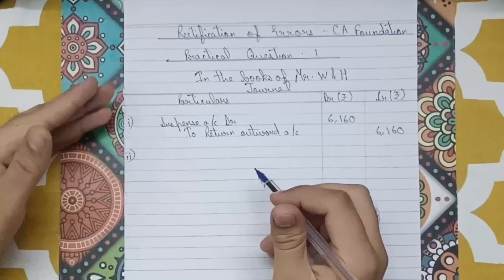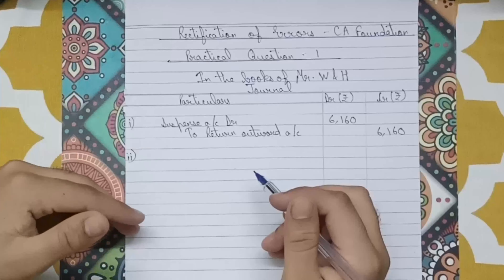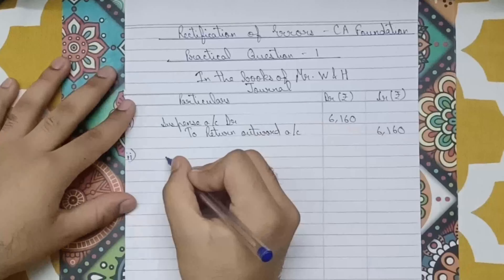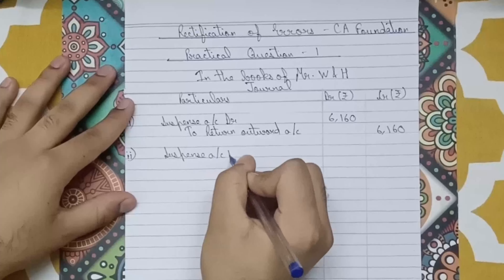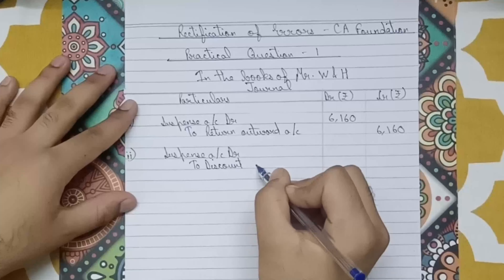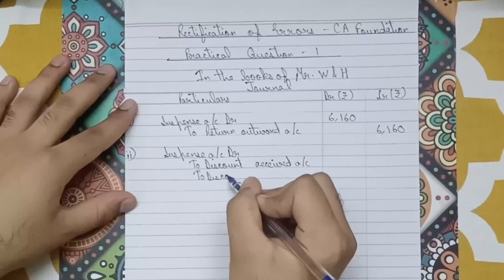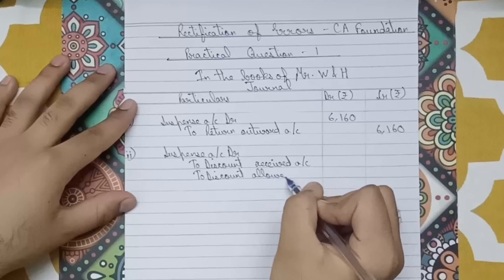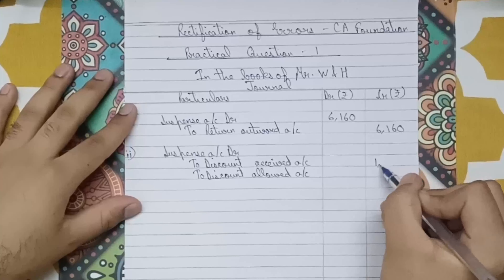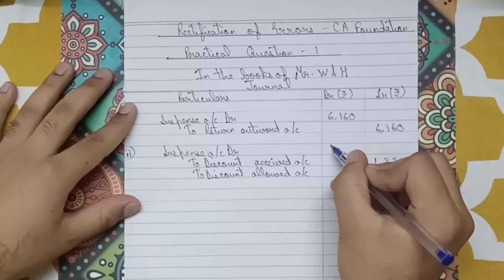Point two: Discount received of 1,320 had been debited to discount allowed. It should have been credited, so we need to credit discount received and also reverse the discount allowed debit. The journal entry will be: Suspense Account debit to Discount Received account and to Discount Allowed account — 1,320 each, totalling 2,640 in the suspense account.